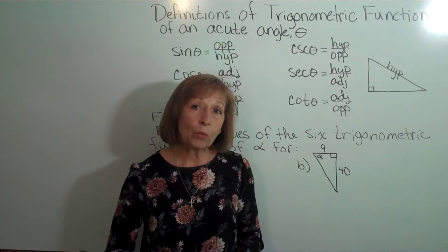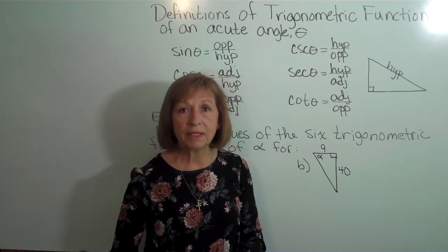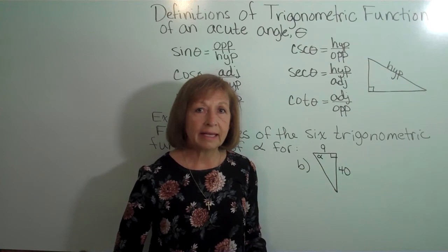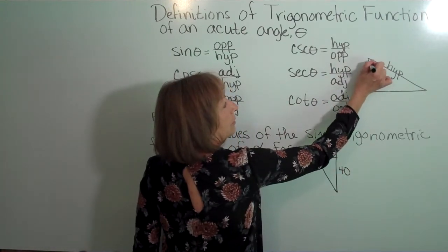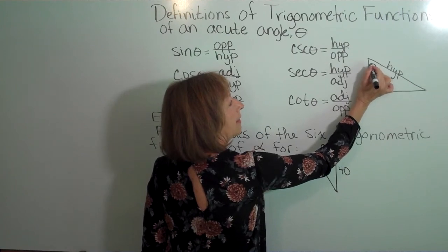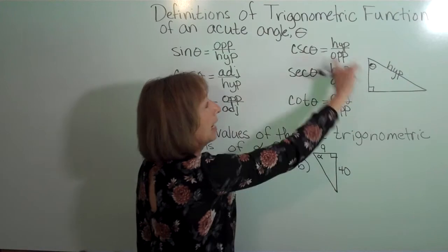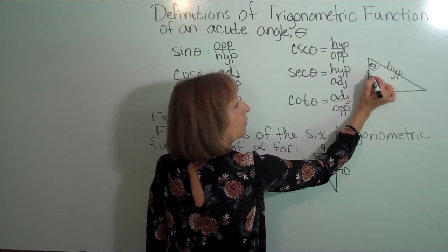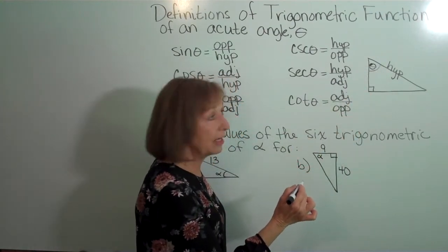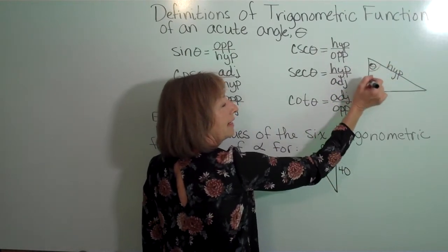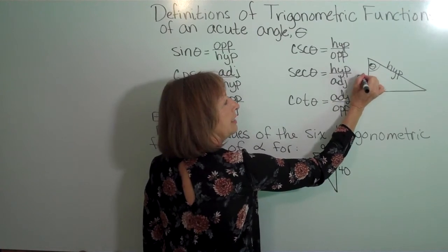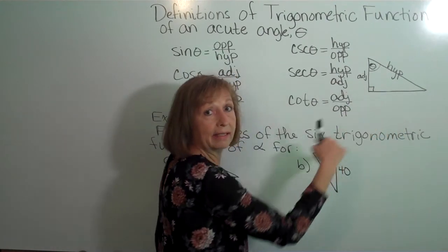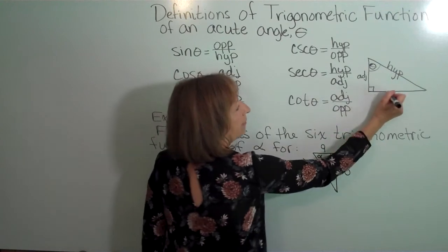Depending on which angle I'm focusing my attention on will determine what the side names are for the legs. Let's say I use this angle up here as my theta. With this angle being theta, the one I'm concentrating on, the side that helps make that theta with the hypotenuse is the adjacent side, and then the side opposite that angle — the one that's not a ray of the angle itself — is called the opposite side.